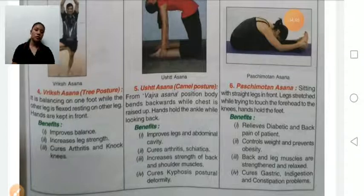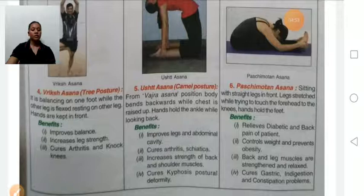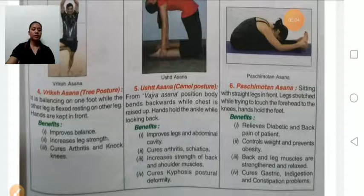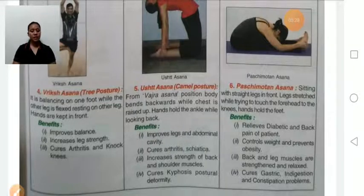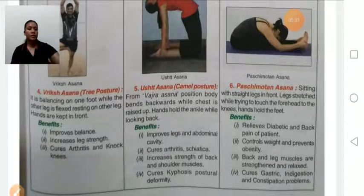Ustrasana, also known as camel pose. First, sit in Vajrasana and then slowly bend backward while the chest rises up. Benefits: it improves leg and abdominal strength, cures arthritis and sciatica, increases strength of back and shoulder muscles, and cures kyphosis — where the spine bends forward. Persons suffering from severe back pain should avoid this asana.